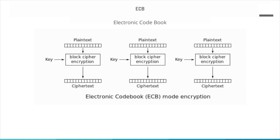If the message is longer than the block length, the procedure is to break the message into blocks of the required length, padding the last block if necessary. As with encryption, decryption is performed one block at a time, always using the same key. The ECB method is ideal for small amounts of data such as an encryption key.